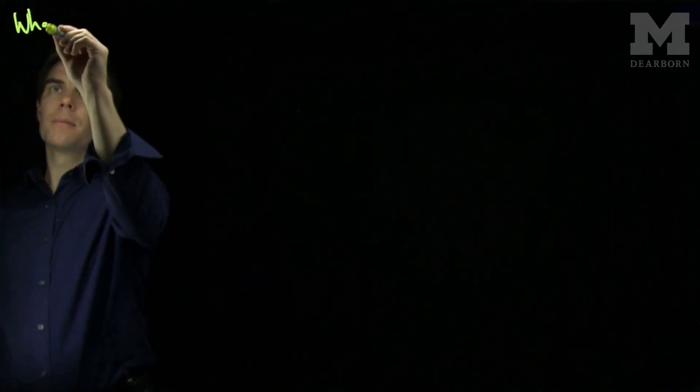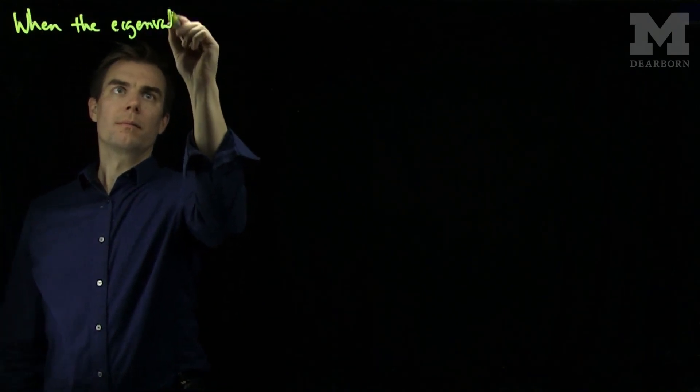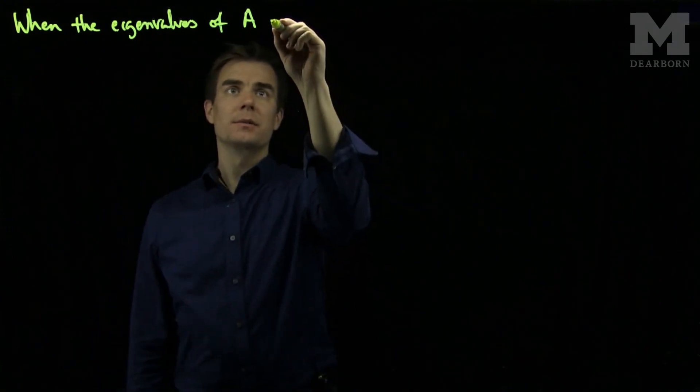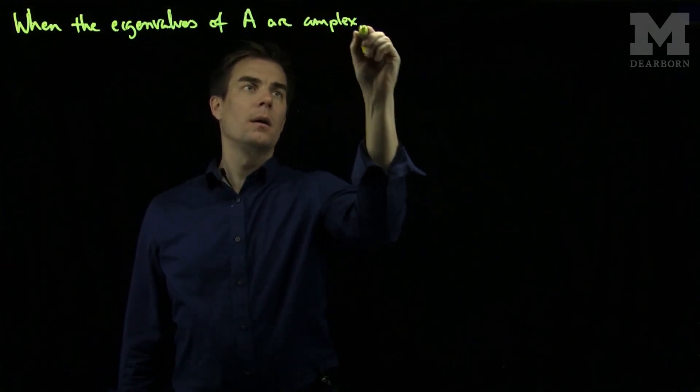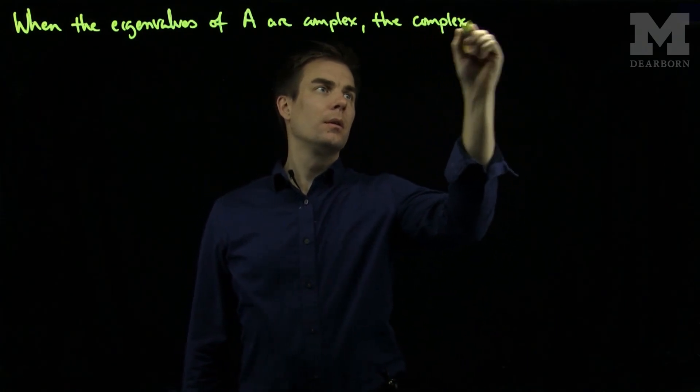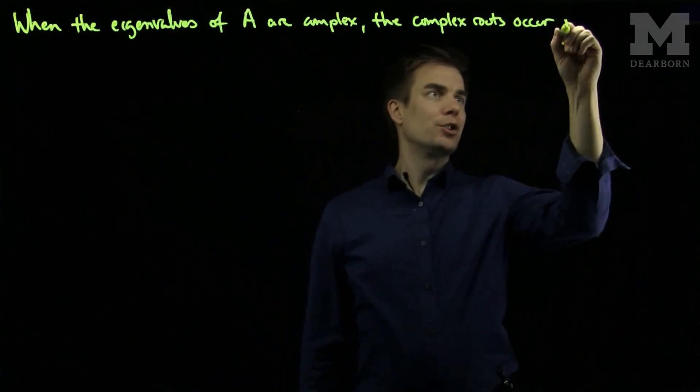Hello students. In this video, we'll discuss how to solve a dynamical system when the eigenvalues of the matrix A are complex numbers. When the eigenvalues of A are complex, the complex roots occur in conjugate pairs.